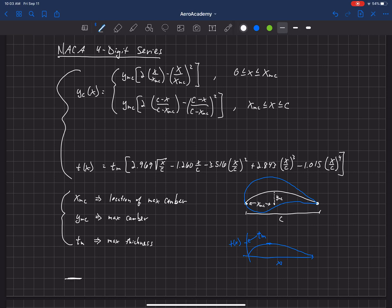So we're going to have four digits down here. And these are just integer values. And this first one, the first digit here, is the amount of camber. So it's the max camber in percent chord.